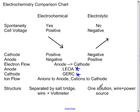Ion flow is also the same in both cells. Anions, or negative ions, go to the anode. Cations, or positive ions, go to the cathode.